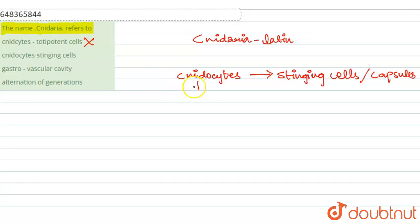And this is the actual meaning of Cnidaria. Cnidaria means cnido-sites, which are the stinging cells or the capsule. We must have seen in a jellyfish, jellyfish has type of stinging cells at the bottom of its body. Jellyfish is an example of Cnidaria.